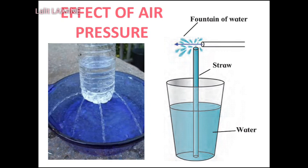Observe and discuss: Take some water in a plastic cup and hold a straw upright in it. Hold a small piece of another straw near the upper end of the first straw and perpendicular to it. Blow hard through the small piece of straw. You will see a fountain of water. Why did this happen? On blowing through the straw, the air at its open end is pushed away and hence the pressure of the air at the opening goes down.